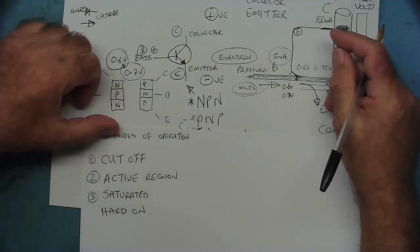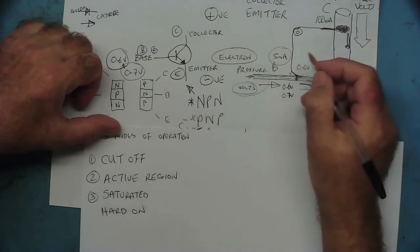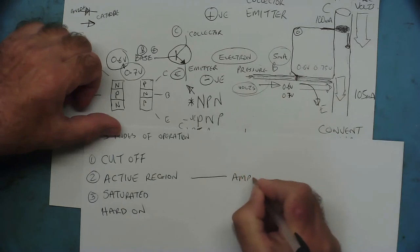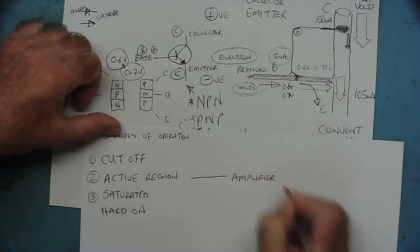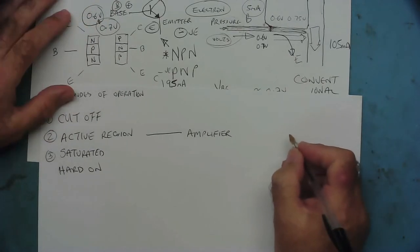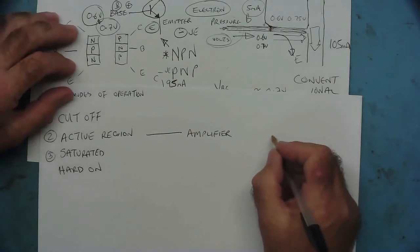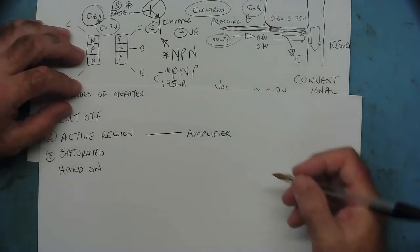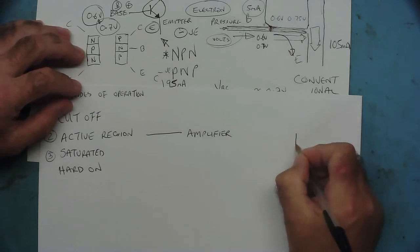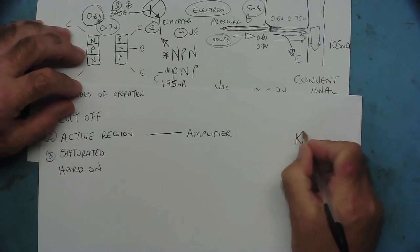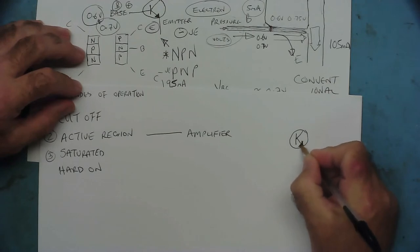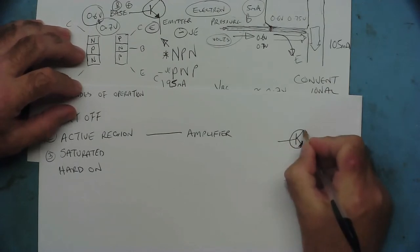When a transistor is being used in the active region, effectively it's an amplifier. Let me show you. We have an NPN transistor - we're using NPN because they're the easiest to understand, but the same is true with PNP, just the voltage polarities are reversed. The arrow on the emitter points outwards in the direction of conventional current. We label base, emitter, and collector.